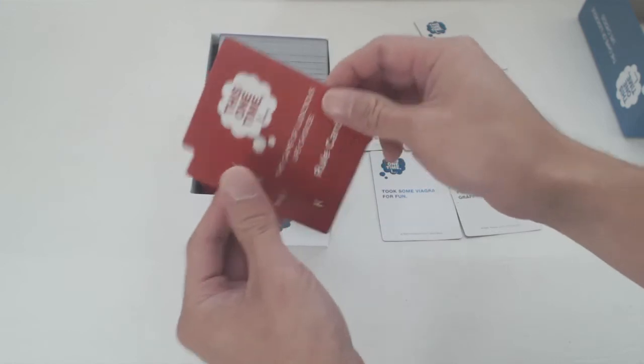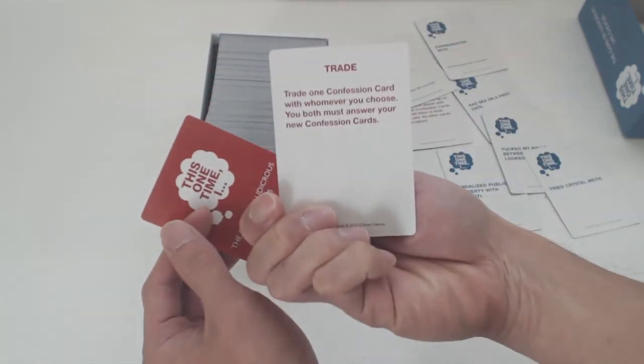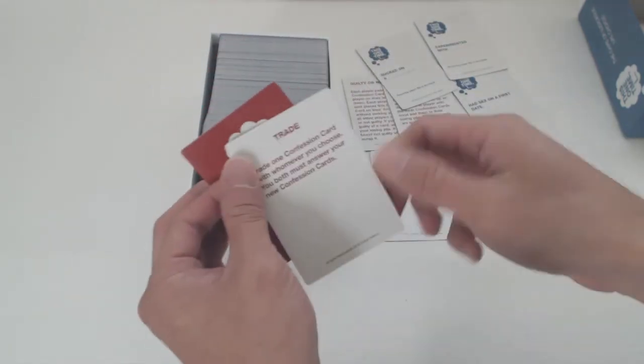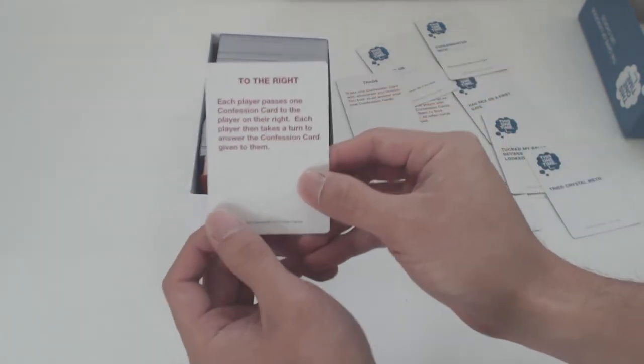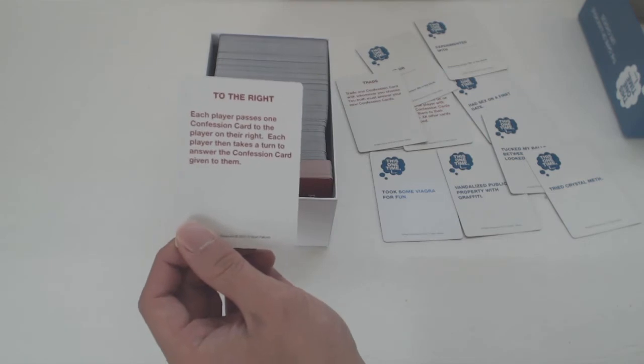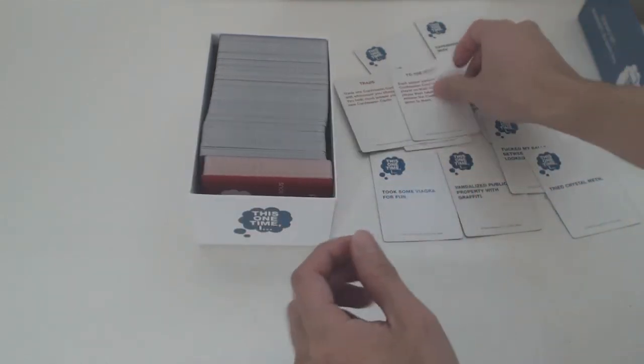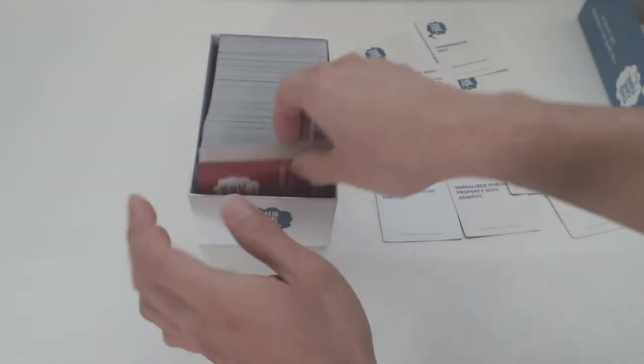There are 11 kinds of rule cards, like trade, where you get to exchange confession cards with another player, and then take turns answering whether or not you've done what's written on it. And to the right, where all the players pass one card to their right and take turns answering them. There are 5 of each rule card in the deck, for a total of 55 rule cards.